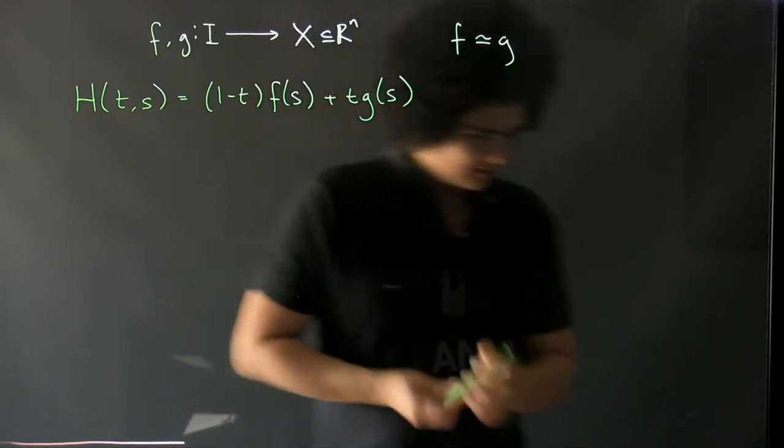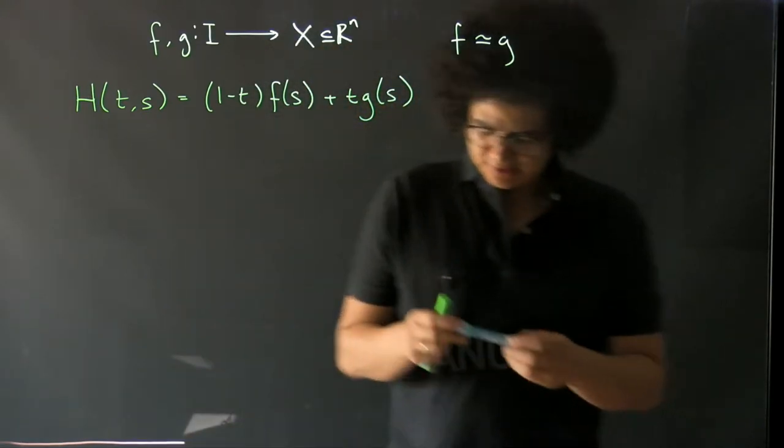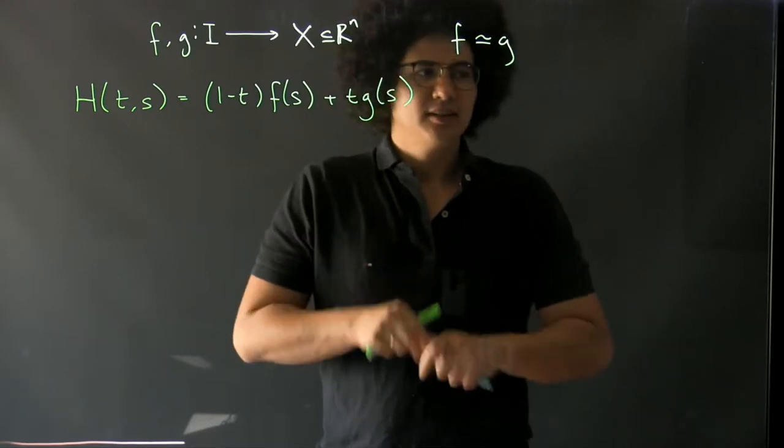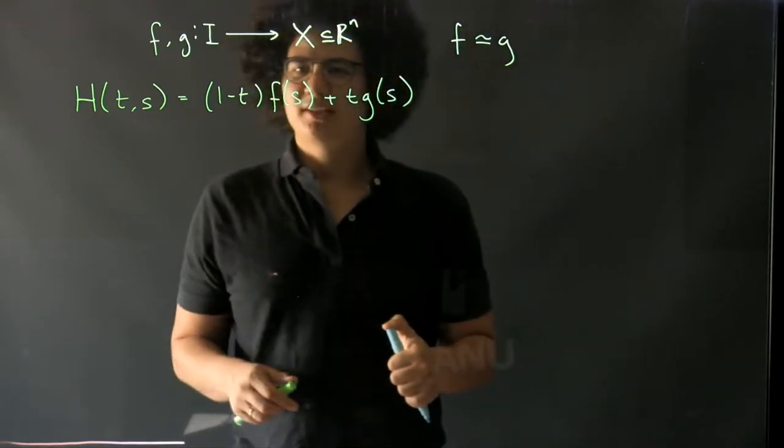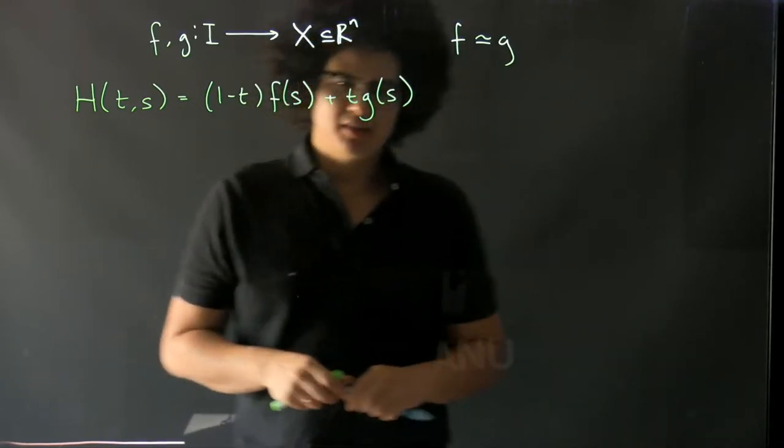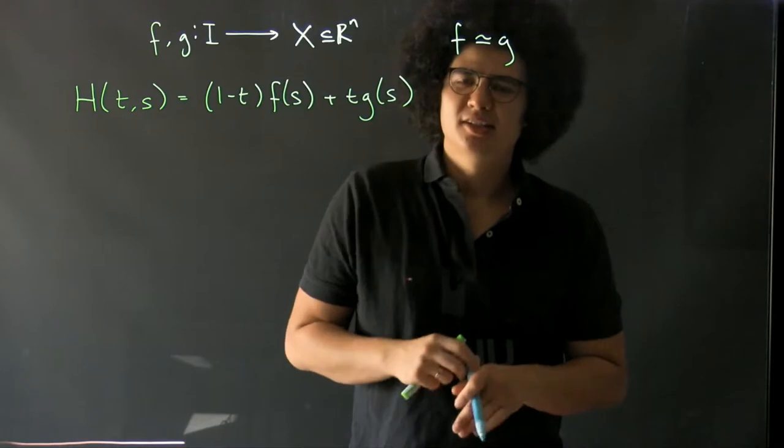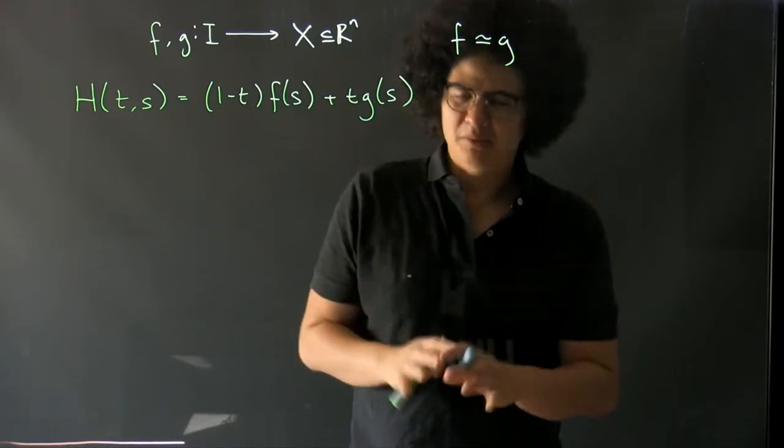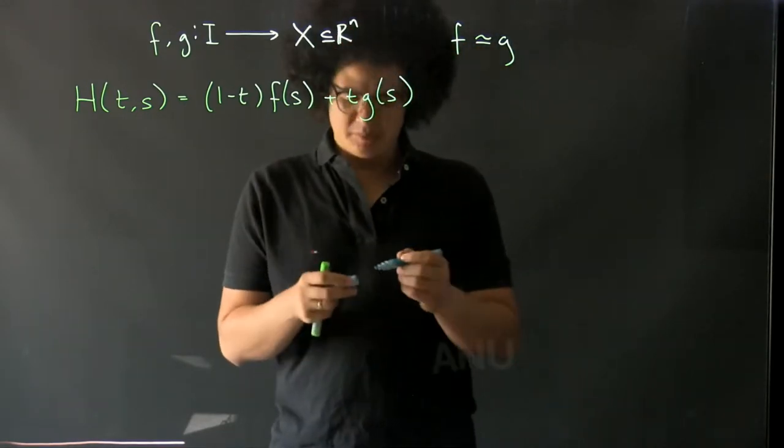So what do we need for this to make sense? Well first we need to be able to add things, so that's why I put in R^n or some convex space, because then you have some notion of being able to add elements in the space.